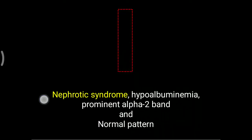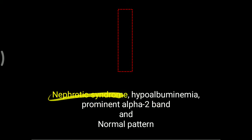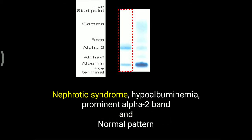First, nephrotic syndrome. In normal agar gel electrophoresis, five particular bands are formed. From the starting point where the serum sample is applied, electric current is passed and different bands are found. The five bands from starting point are: gamma, beta, alpha-2, alpha-1, and lastly albumin. Albumin can move fastest or farthest from the starting point.